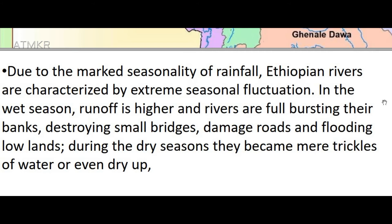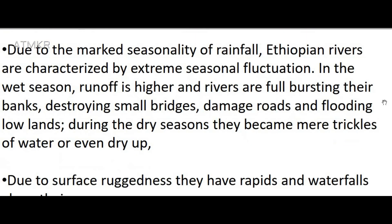Due to the marked seasonality of rainfall, Ethiopian rivers are characterized by extreme seasonal fluctuation. In the wet season, runoff is higher and rivers are full, bursting their banks, destroying small bridges, damaging roads, and flooding lowlands. During the dry seasons, they become mere trickles of water or even dry up. Due to surface ruggedness, rivers have rapids and waterfalls along their course. Some of the rivers also serve as boundaries, both international and domestic administrative units.